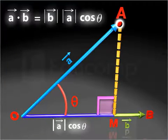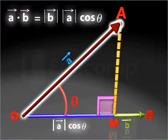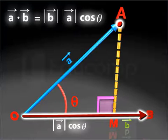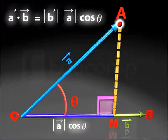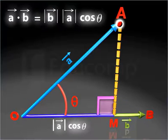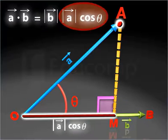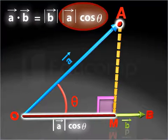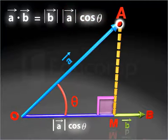Thus, the scalar product of vectors A and B is the product of the magnitude of vector B and the scalar component of vector A along vector B.